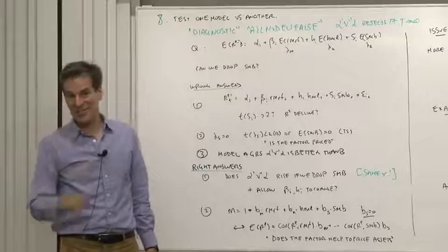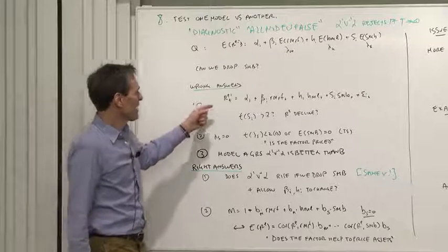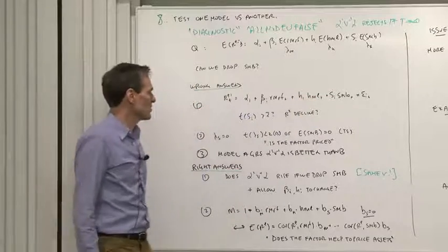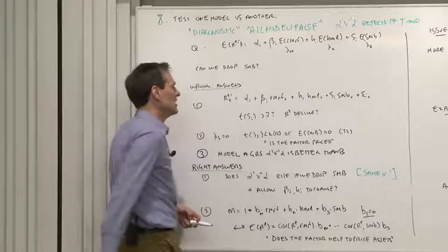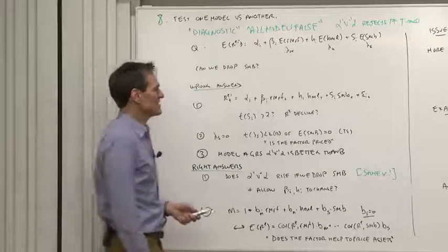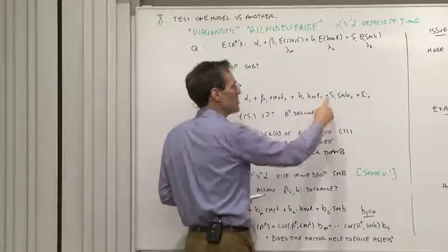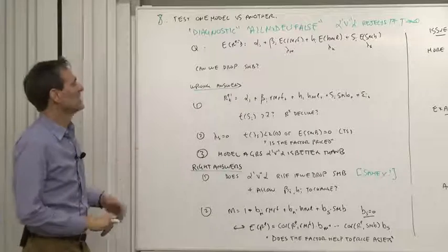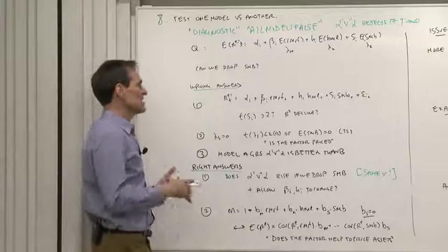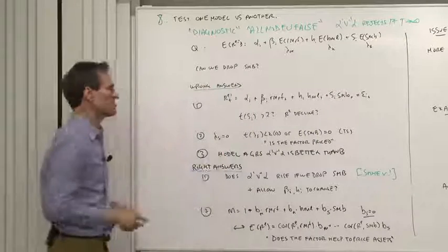There's a bunch of wrong answers to this question. So let's not do one of the wrong answers. One of the wrong answers is to look at that time series regression and see, are those T-statistics on the SMB coefficients significant? That measures whether the betas are significant, but that doesn't measure the question, can we delete SMB from the model in general? Does deleting SMB from the model change our alphas? That's the question we're after.